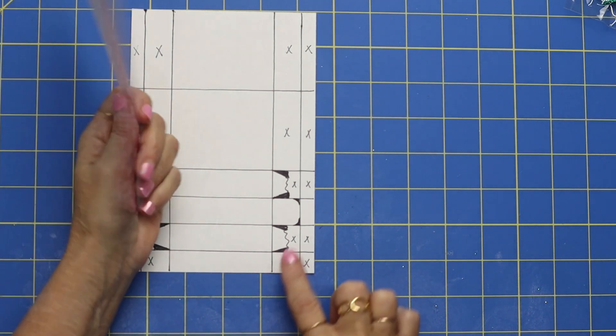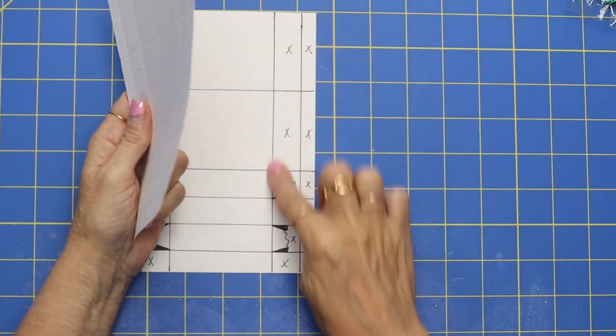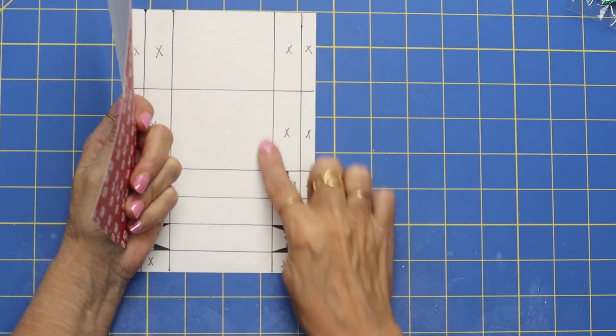So I'm going to start and I'm going to cut out these four little squares.